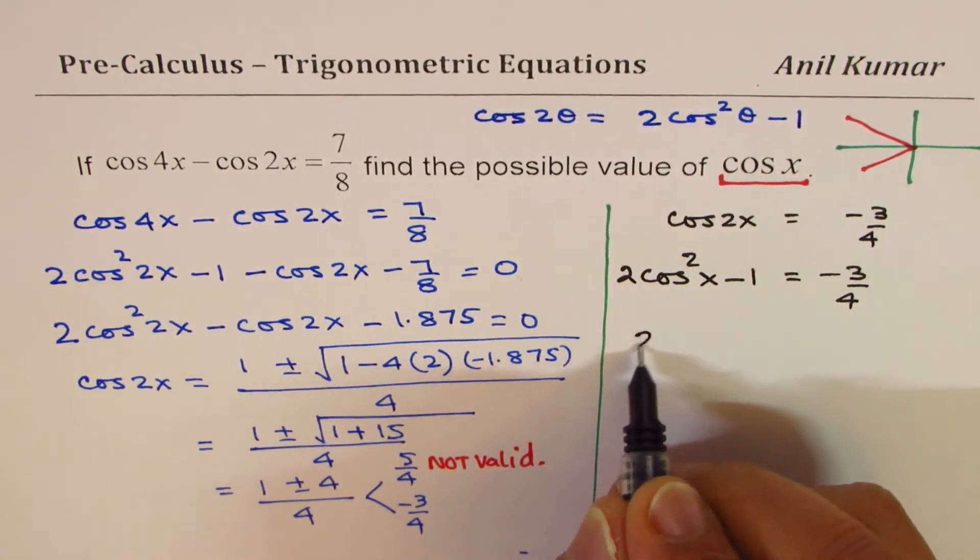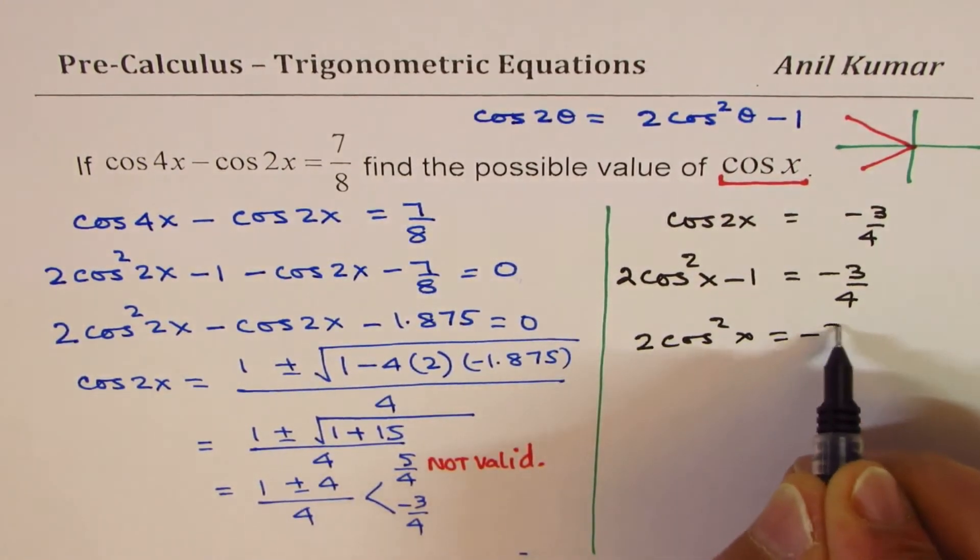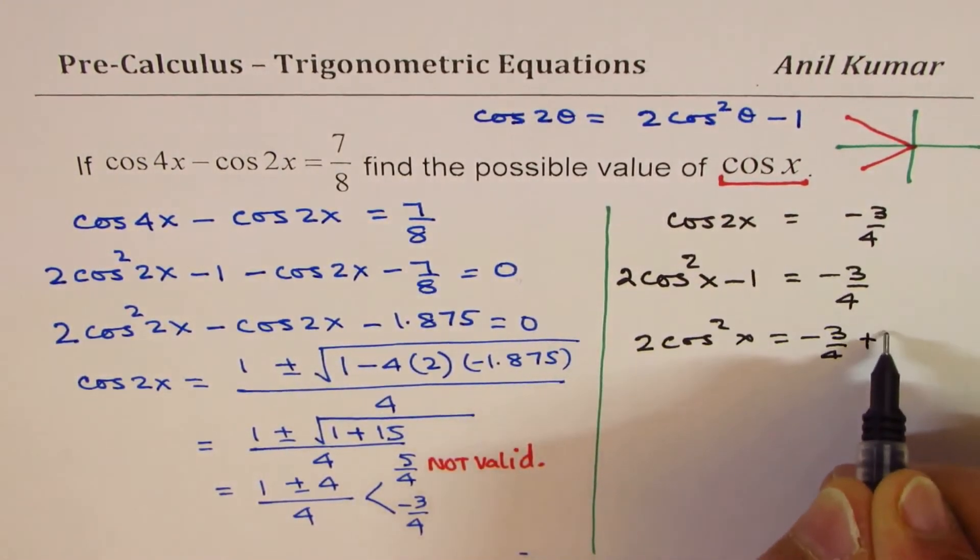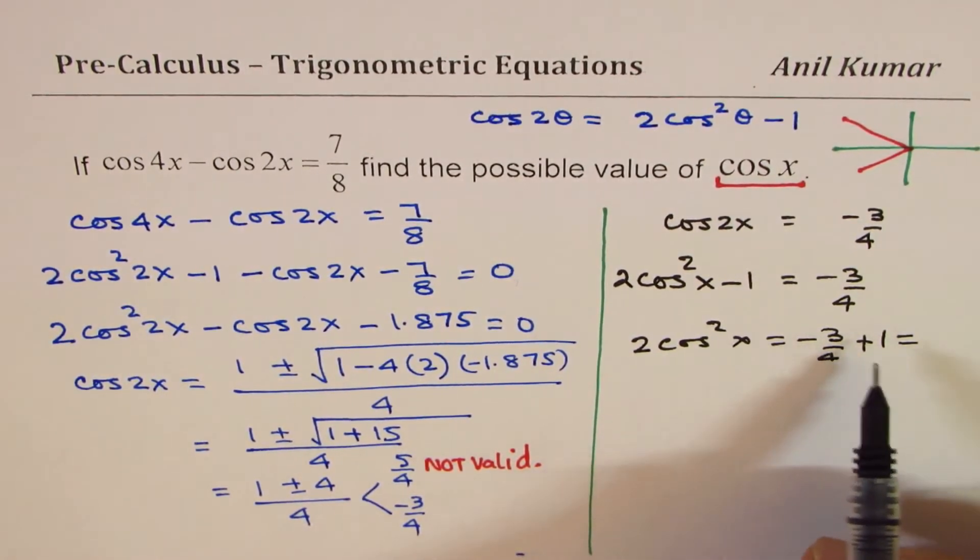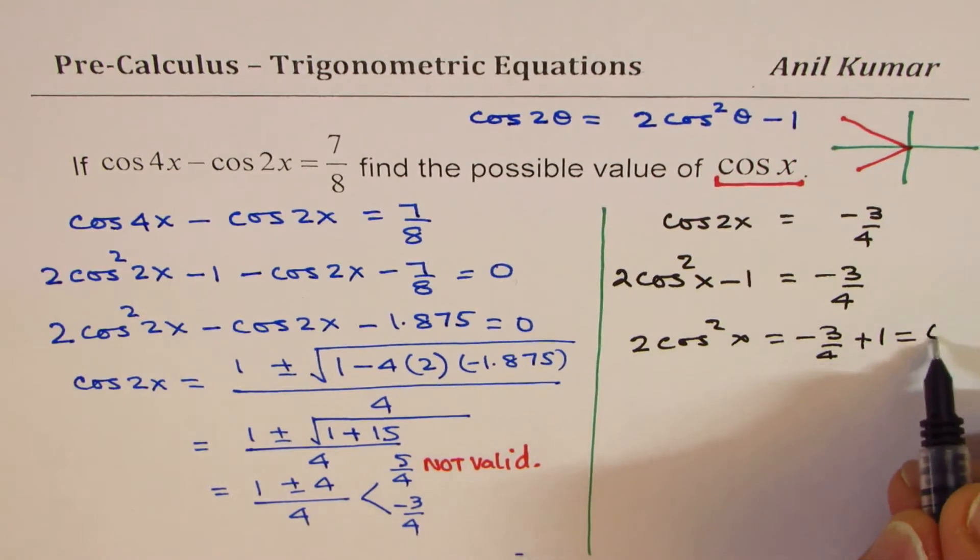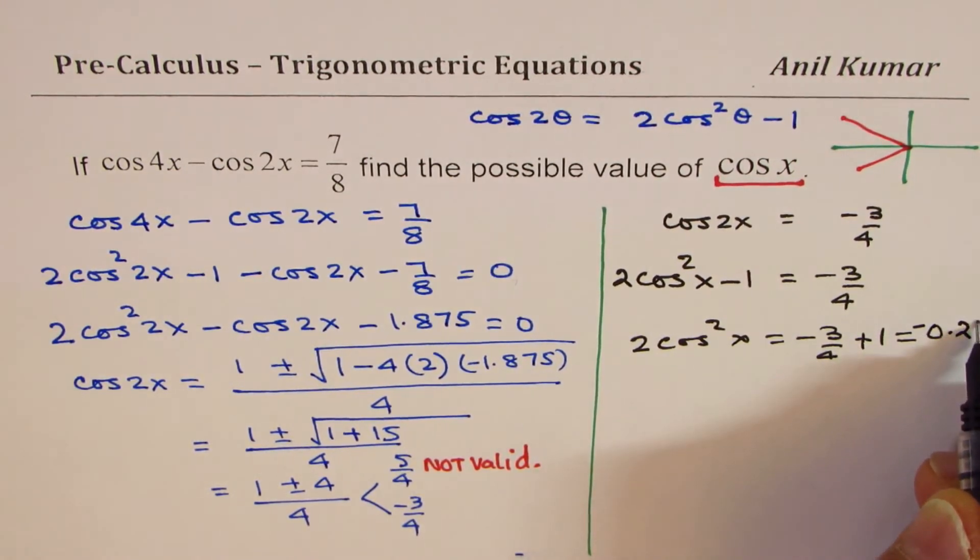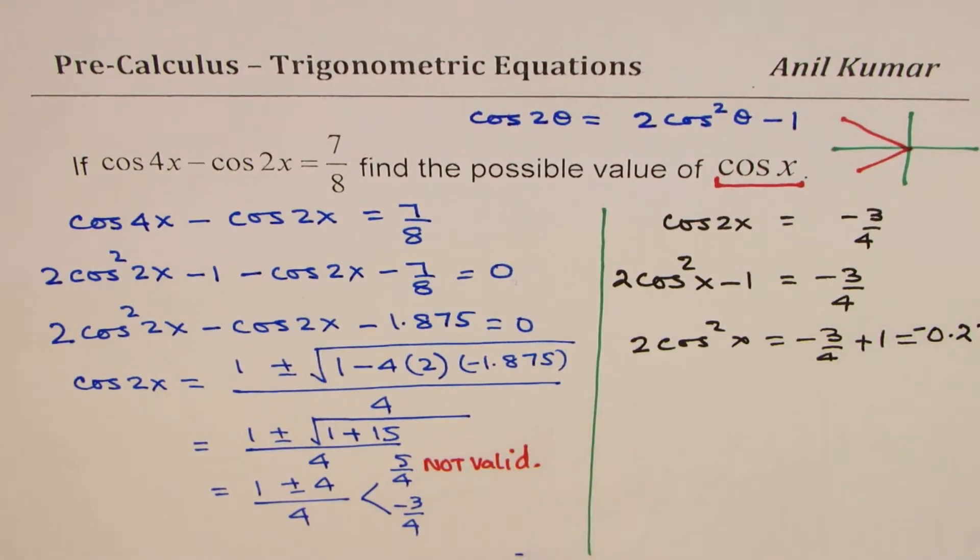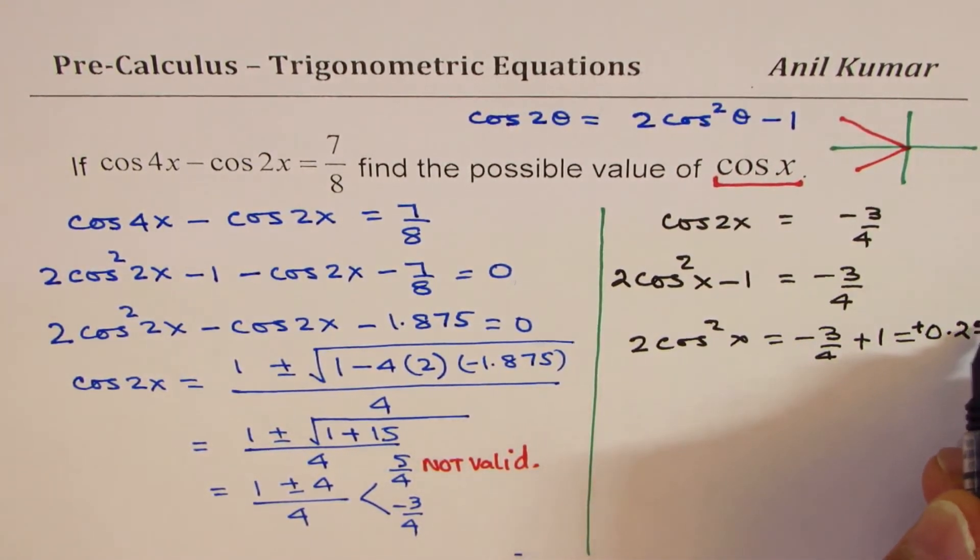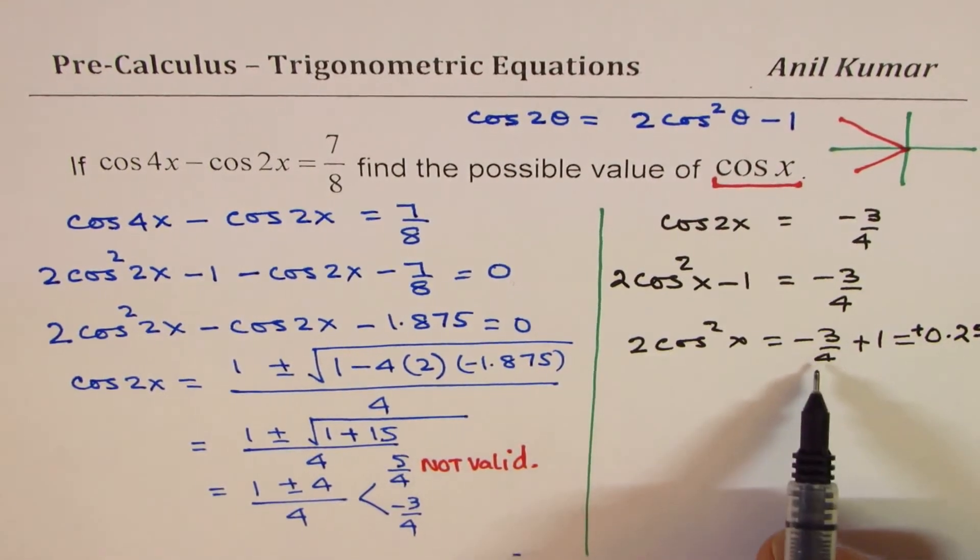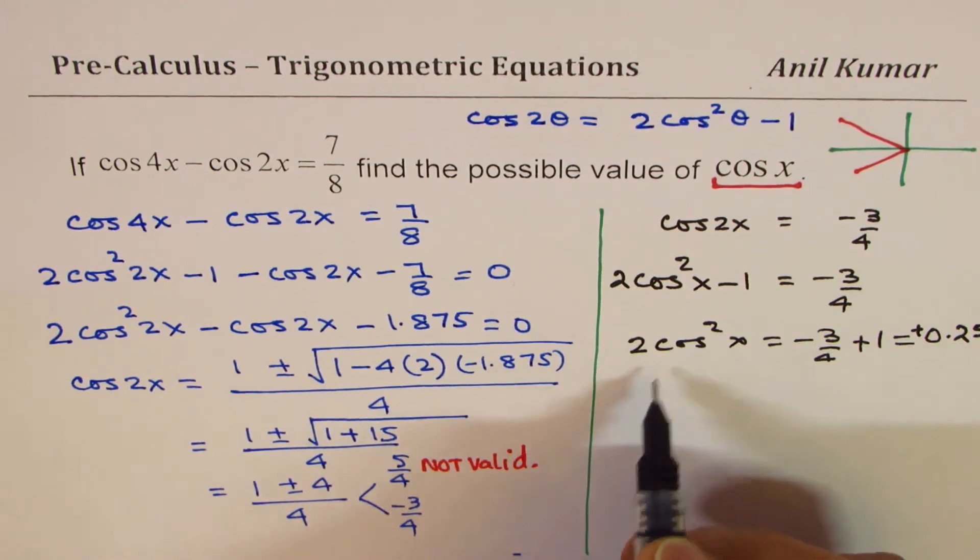Taking 1 to this side, we get 2 cos² x equals minus 3 over 4 plus 1. So 1 minus 3 over 4 is 0.25. That gives me 4 minus 3, which is plus 1 over 4, which is 0.25.